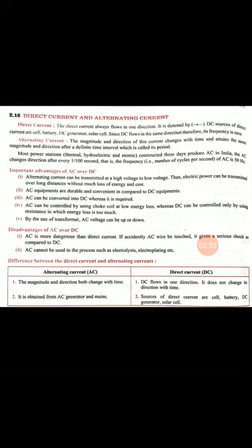Alternative current has more advantages compared to DC. The first advantage is that alternative current can be transmitted at high voltage and then stepped down to low voltage, so electric power can be transmitted over long distances without much loss of energy and cost.